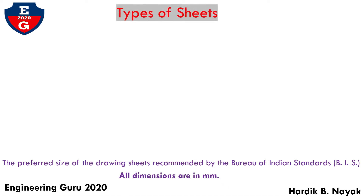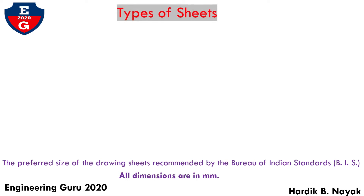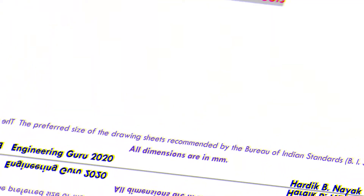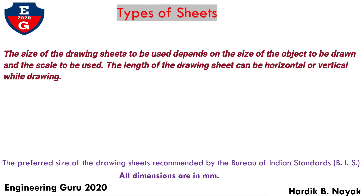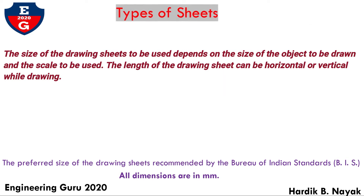The drawing sheets are designated by the symbols A0, A1, A2, A3, A4, and A5. A0 being the largest and A5 being the smallest. All dimensions are in mm. We will discuss different sizes of sheets.